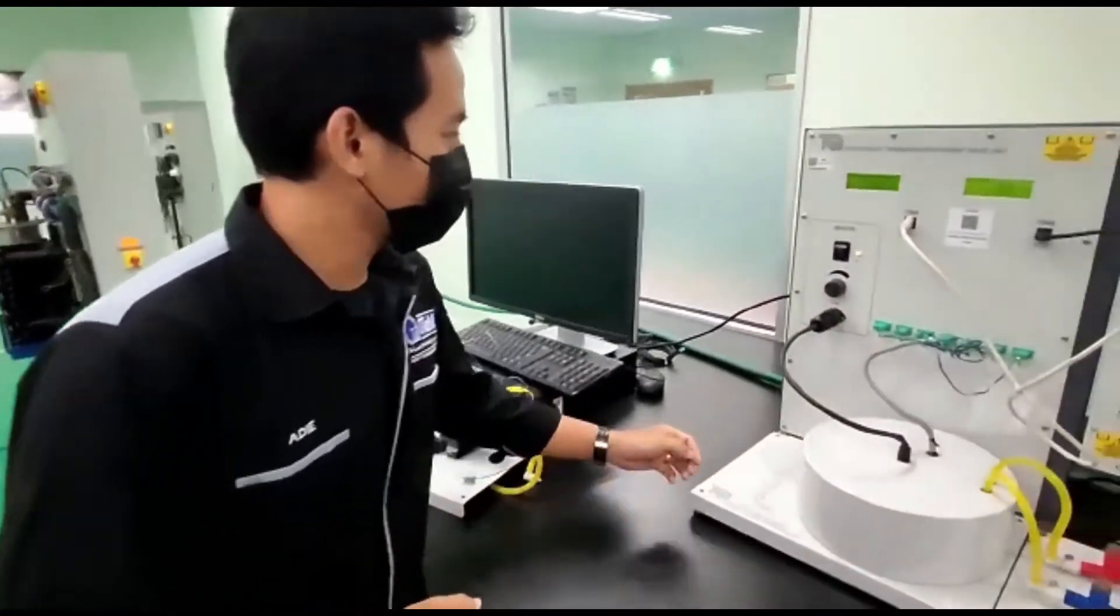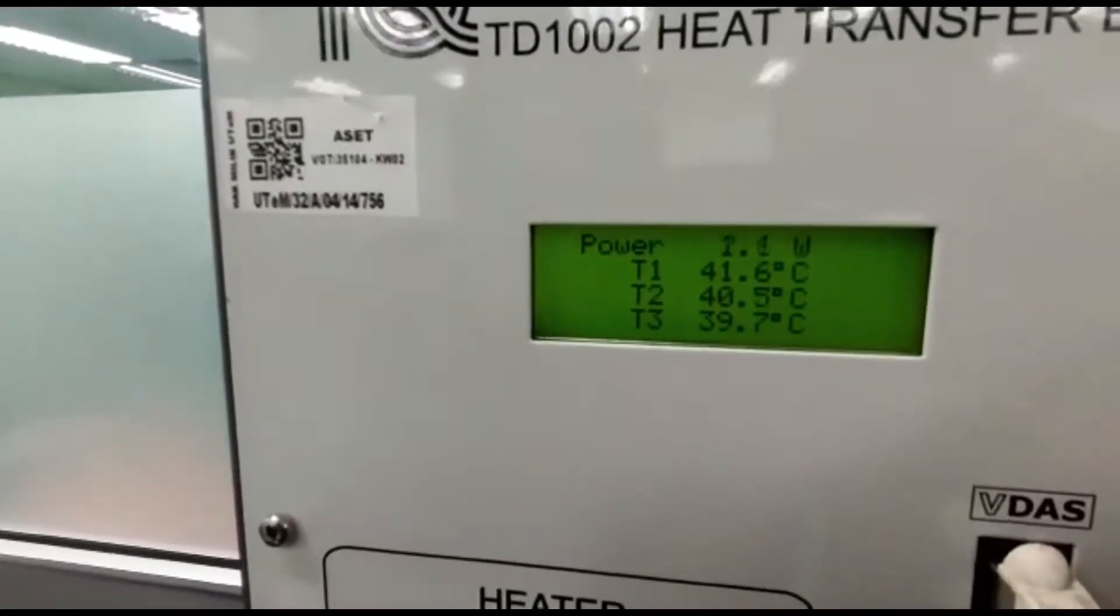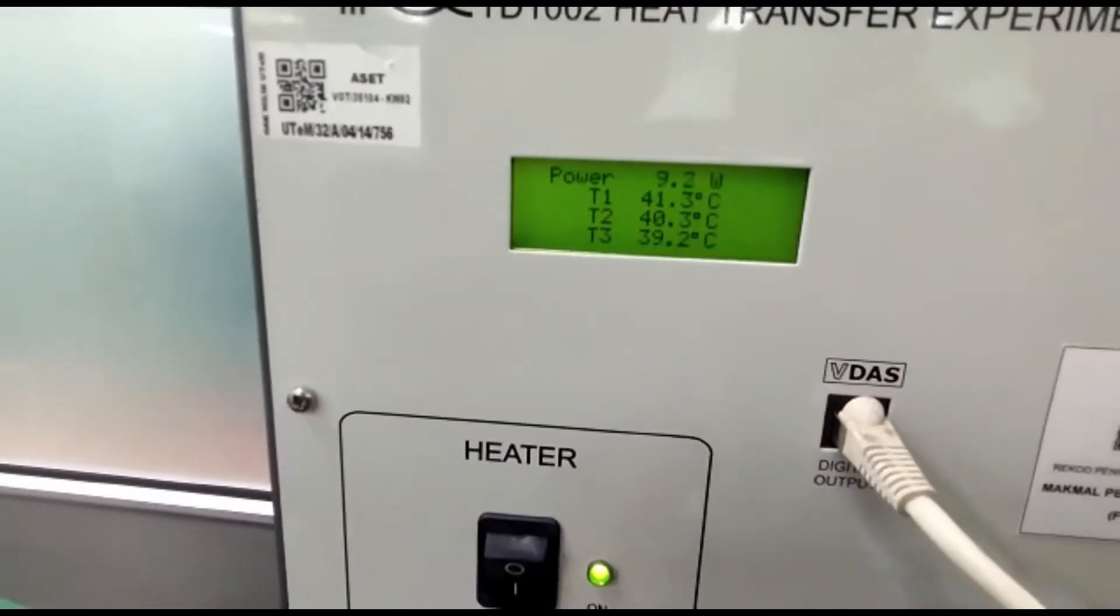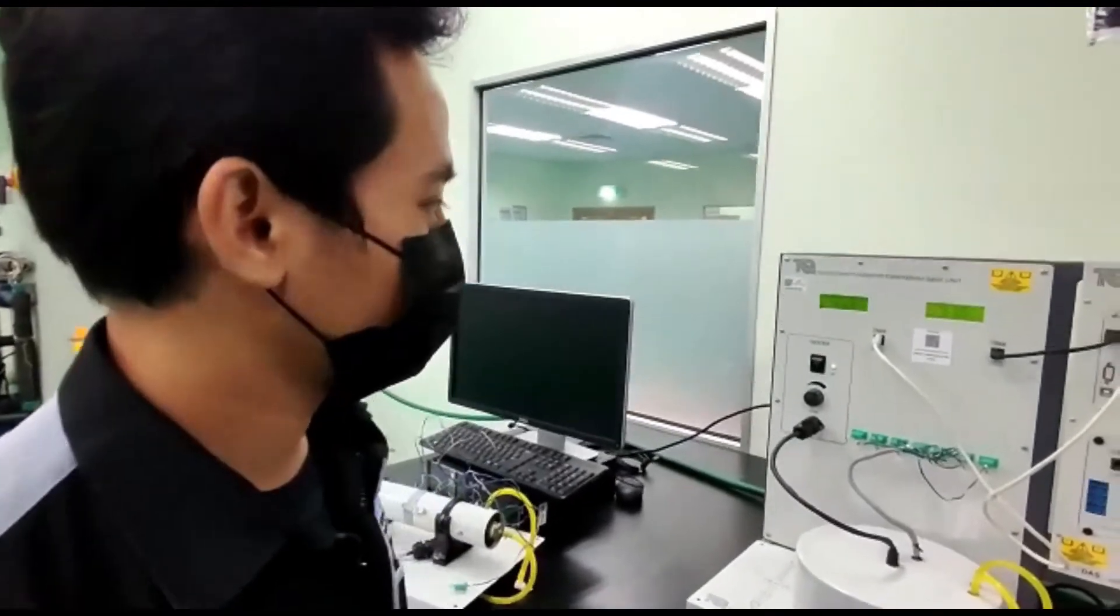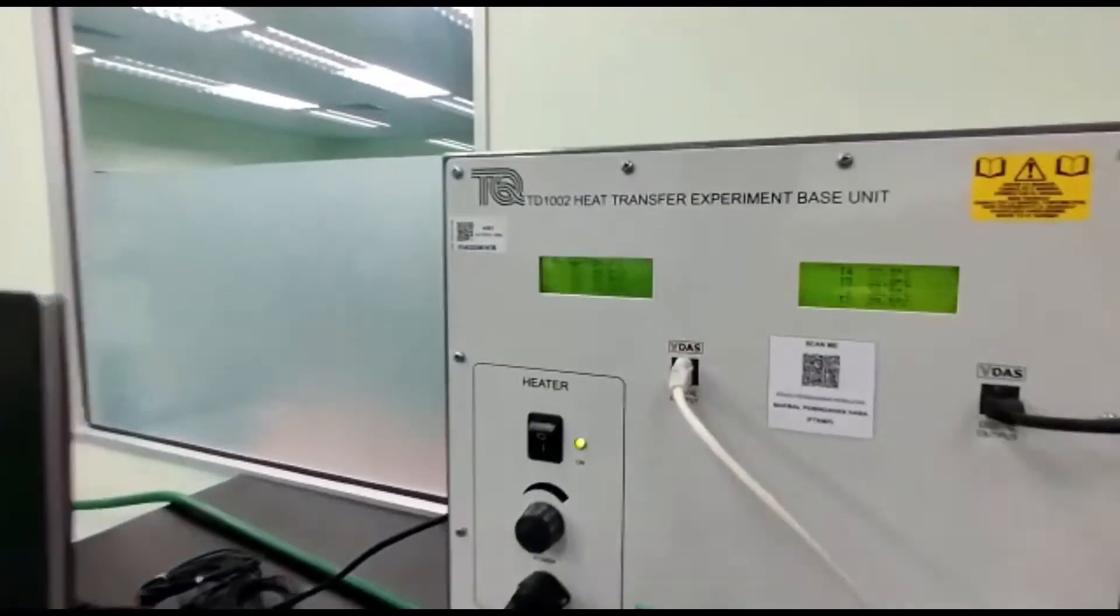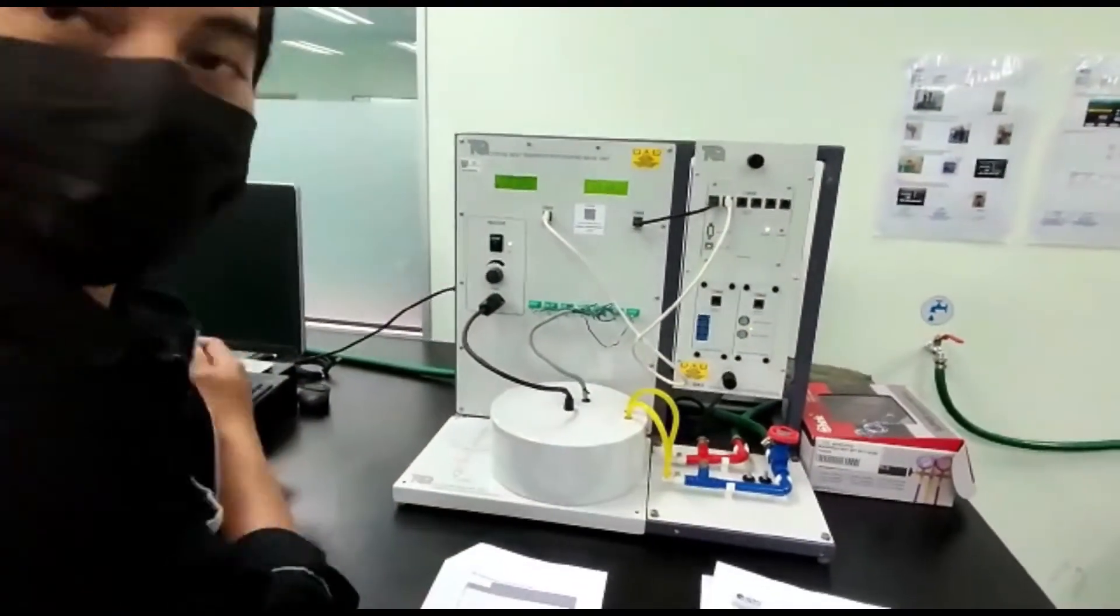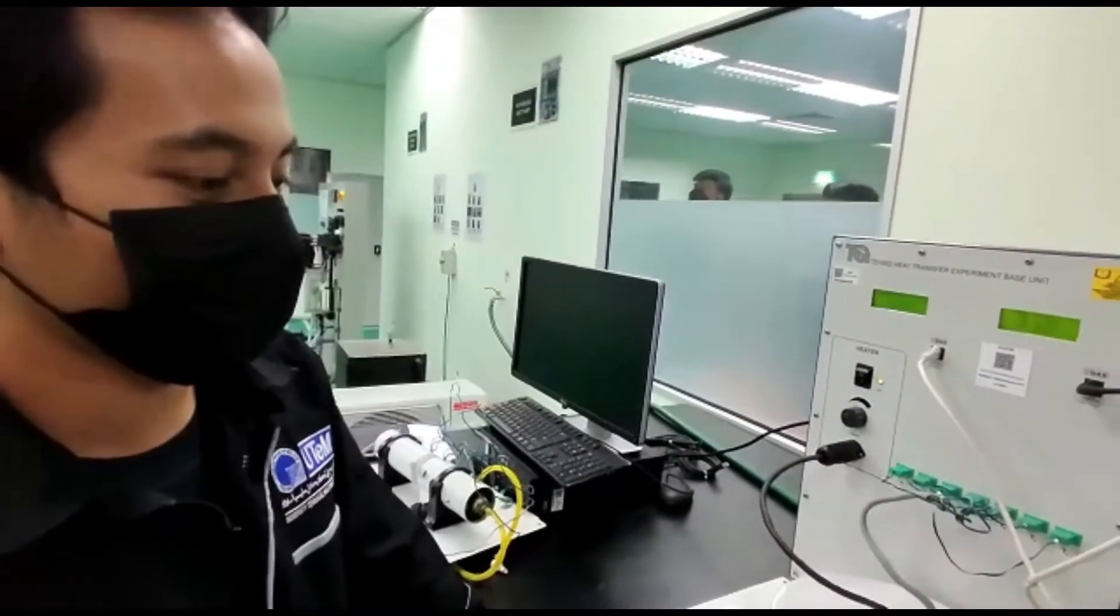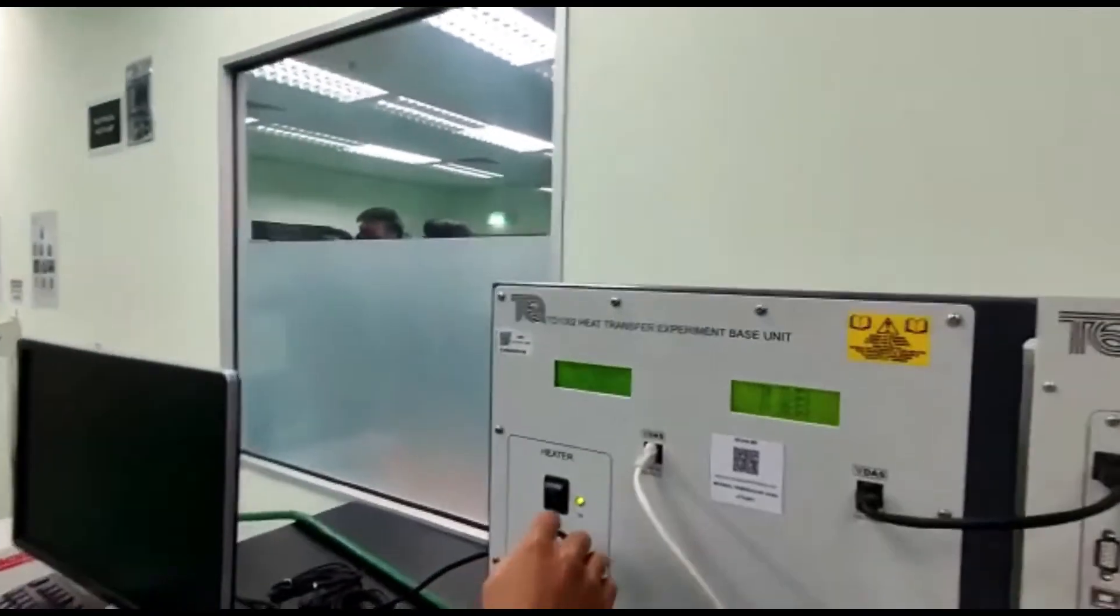So I will continue the procedure. The next step is we will set the power into 30 watts. Then we will increase the increment into the 50 watts. We will set the power to 51.